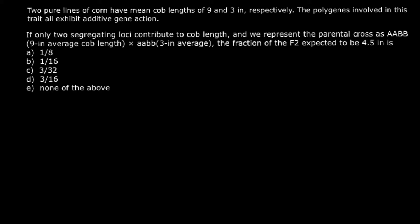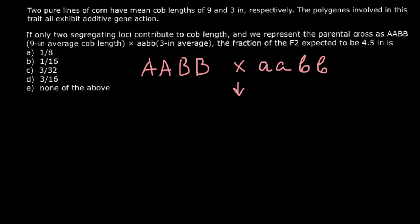I want to start my explanation with a cross of two parental genotypes. The first parental genotype is homozygous dominant for both genes: capital A, capital A, and capital B, capital B. We cross it with another genotype that is homozygous recessive for both genes: small a, small a, and small b, small b. As a result of this cross, the F1 generation genotype would be capital A, small a, and capital B, small b.